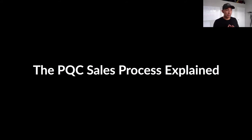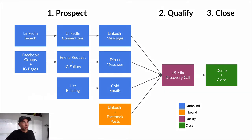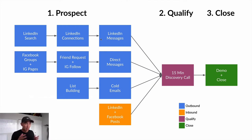First, the PQC sales process explained. The P stands for prospect, the Q stands for qualify, and the C stands for close. In the prospect step — step number one — we are reaching out to our dream clients, identifying them and reaching out on different platforms, wherever they're hanging out. It could be LinkedIn, Facebook, Facebook groups, or Instagram.